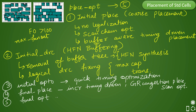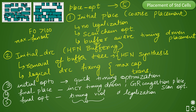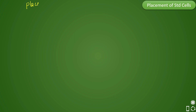The fifth and last stage is final opto, where the tool fixes any remaining timing violations and also performs legalization. Legalization happens in this most important stage, and after final opto you will see a good amount of timing fixed.